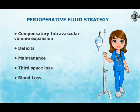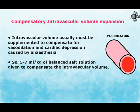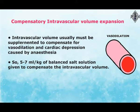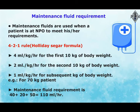Operative fluid strategy covers compensatory intravascular volume expansion, deficits, maintenance, third space loss, and blood loss. Compensatory intravascular volume expansion: intravascular volume usually must be supplemented to compensate for vasodilation and cardiac depression caused by anesthesia. Five to seven milliliters per kilogram of balanced salt solution is given to compensate the intravascular volume.